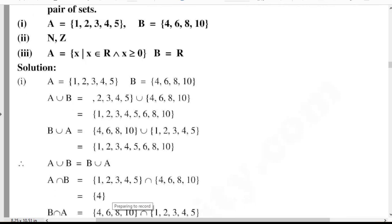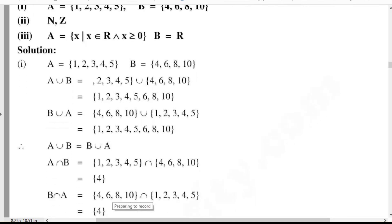Next, B intersection A: set B is {4, 6, 8, 10} intersection {1, 2, 3, 4, 5}. The common element of set B and A is equal to 4. So A intersection B is equal to B intersection A. Hence proved.